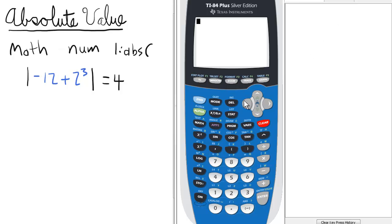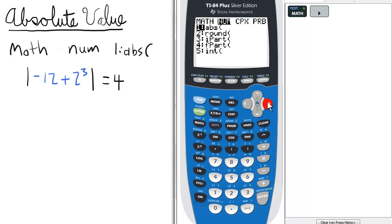To find the absolute value of an expression, we're going to access the Math menu. From there, we select Number, and we press 1 or just Enter for ABS.